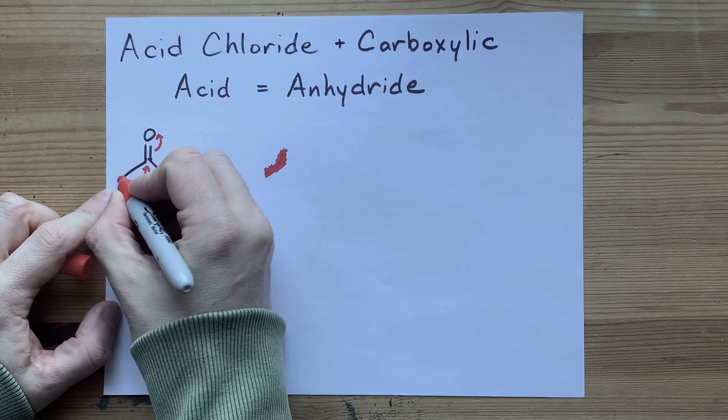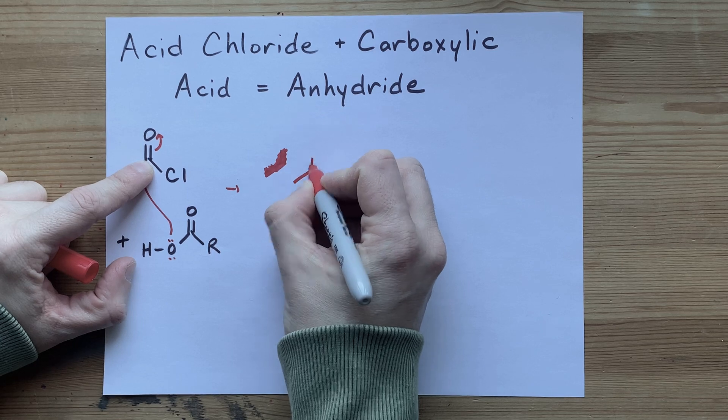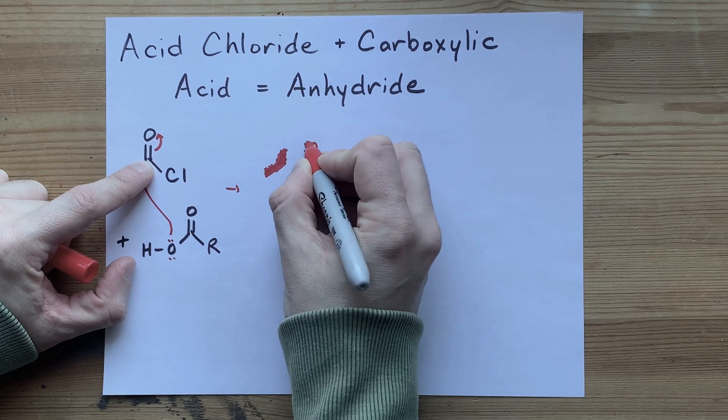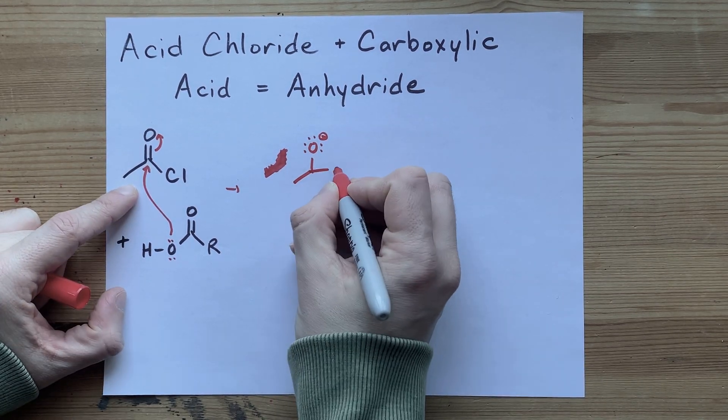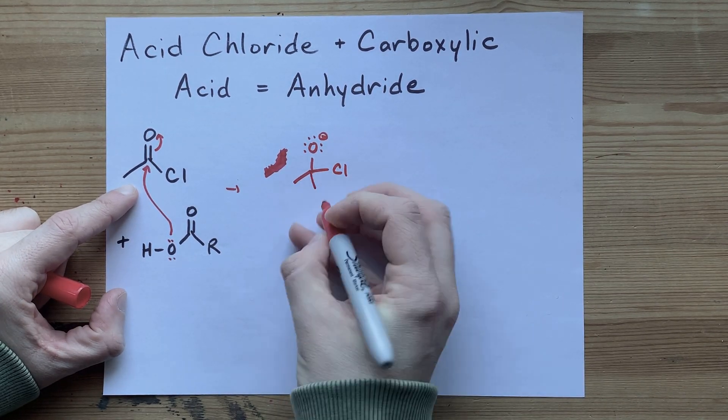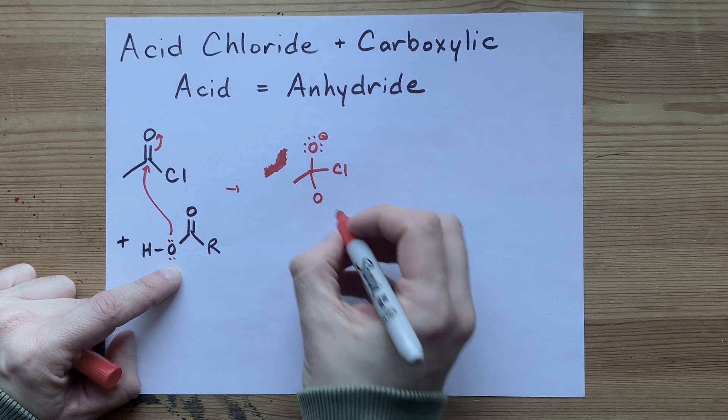That means this carbon chain of the acid chloride is still intact, but the oxygen itself is single bonded. It now has three lone pairs and a formal charge of minus one. The chlorine is still attached, and you are now attached via the oxygen of the carboxylic acid.